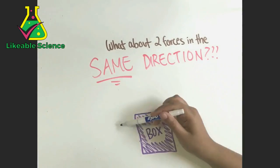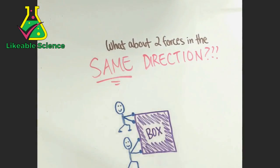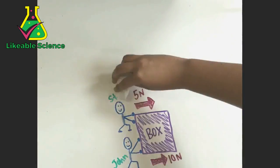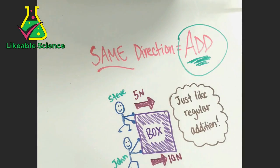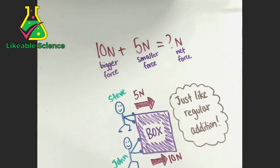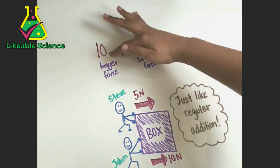So how about if the two forces were in the same direction? If Steve pushes a box using 5 newtons, and John pushes using 10 newtons in the same direction, then you would add 5 newtons plus 10 newtons equals the net force. 5 plus 10 is 15, so the net force is 15 newtons.